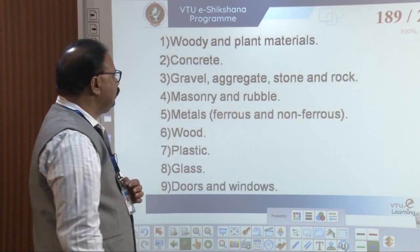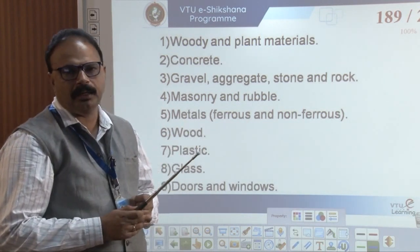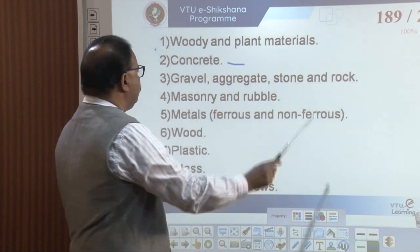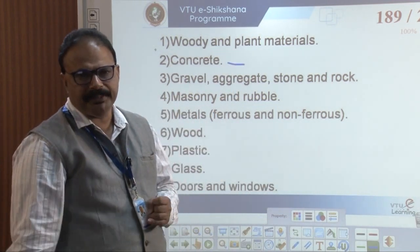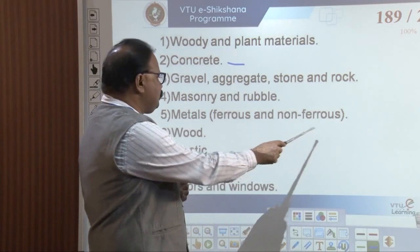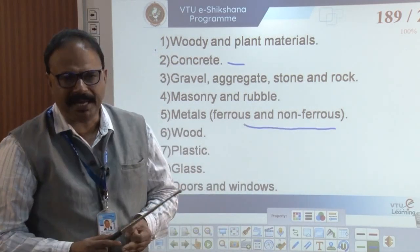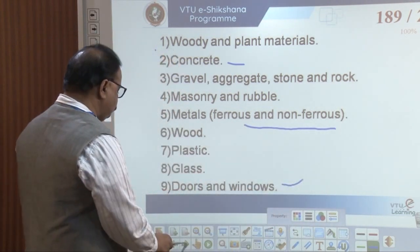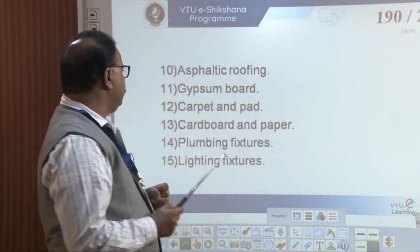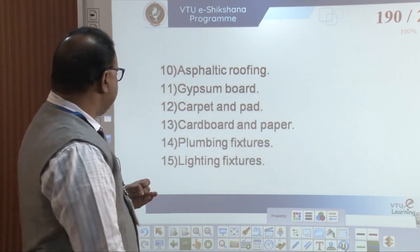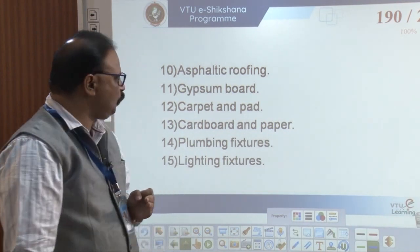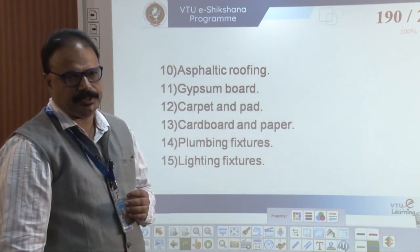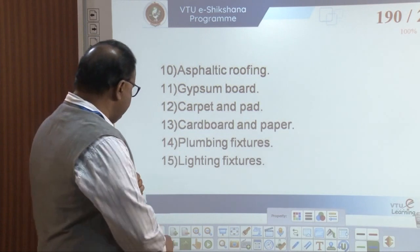One by one — see the first one: wood and plant materials, concrete. Second one: gravel, aggregate and stone, rocks, masonry and rubble. Metal ferrous and non-ferrous, wood, plastic, glass, door and window. And asphalt flooring, gypsum board, carpet and pad, cardboard and paper, plumbing fixtures, lighting fixtures. These are the sources of the construction waste. Mainly we will get wood, plastic, glass in a construction.